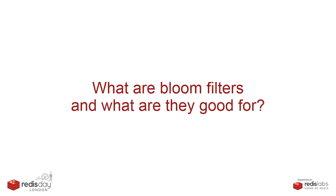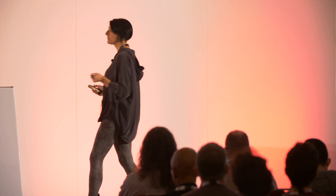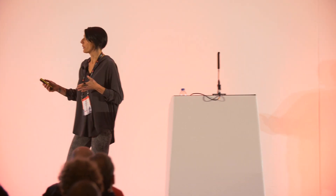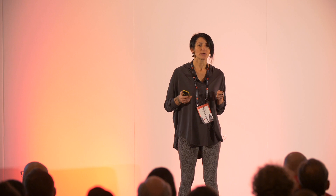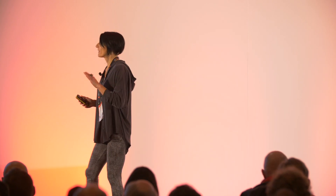So what are Bloom filters and what are they good for? They answer a very simple question: is this element present in my set? The obvious answer: yes or no. If the Bloom filter says no, we can trust it — that element is definitely not present in the set. But if it says yes, we really cannot trust the positive responses. With Bloom filters, you do get some false positives. It's a very small rate, it's a controllable one. It does get close to zero, but never quite zero.